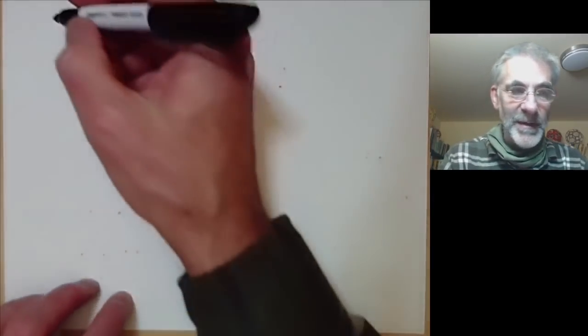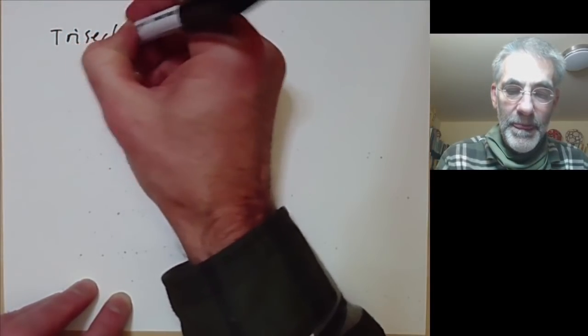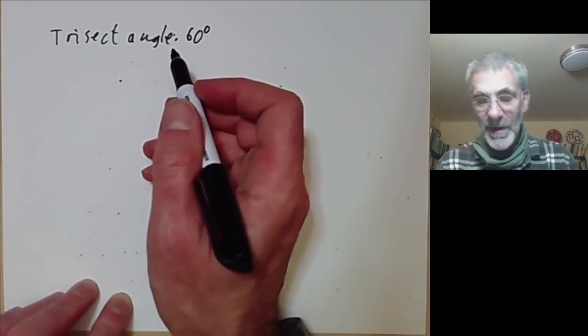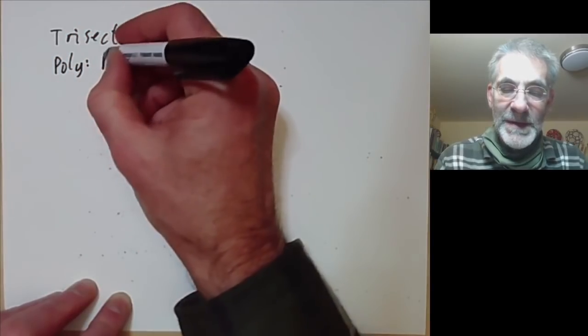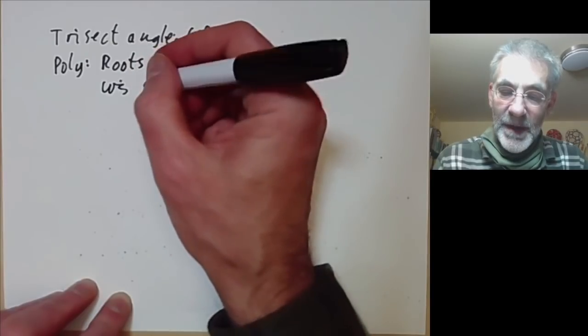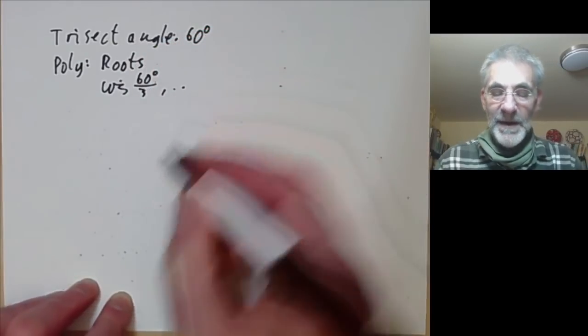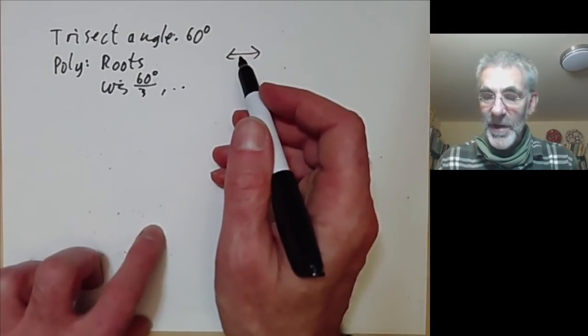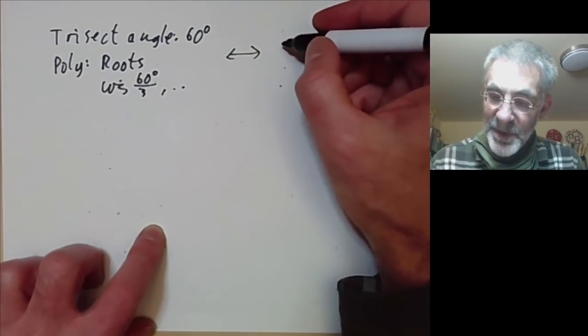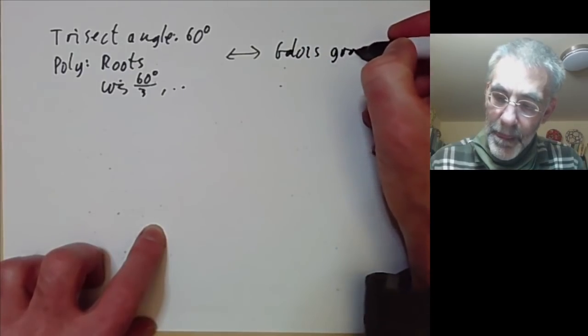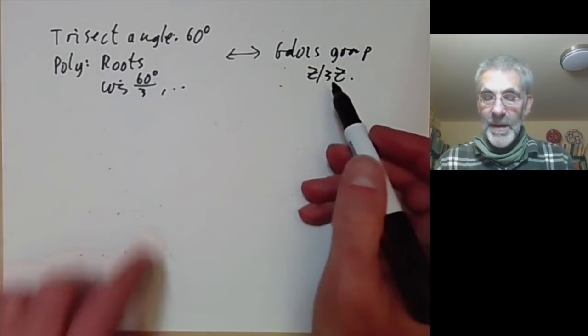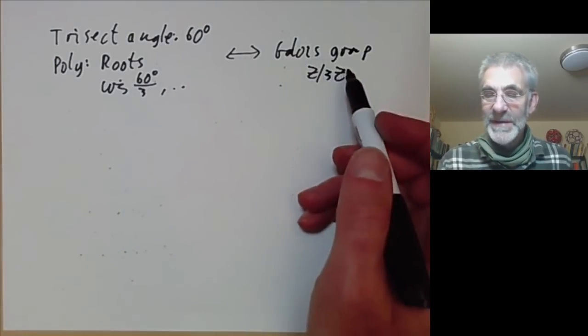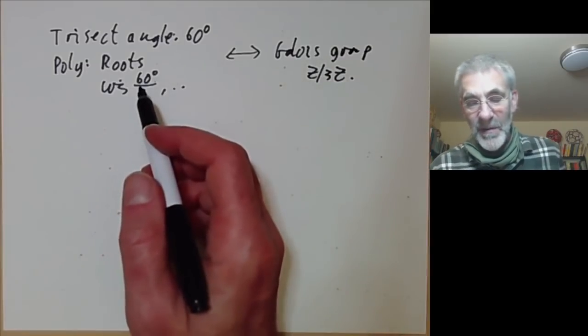Another classical example is trisecting the angle. We can try and trisect an angle of 60 degrees with ruler and compass. Here we've got a polynomial whose roots are cosine of 60 degrees over 3 and its other roots. This corresponds to a Galois group which is cyclic of order 3. Being able to construct something with ruler and compass is very closely related to the Galois group being of order a power of 2. As the Galois group is not a power of 2, this will show you can't trisect an angle.